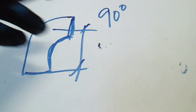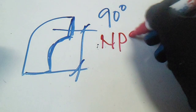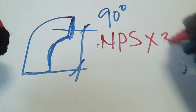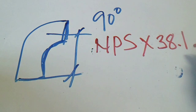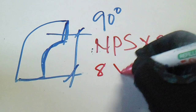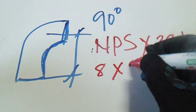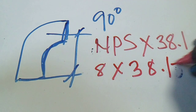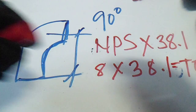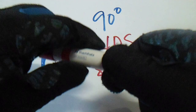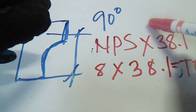The new way: NPS multiplied by 38.1. For example, 8 times 38.1 gives the take-off — the center of this 90 degrees elbow. So this is the new way.